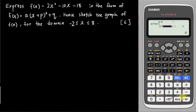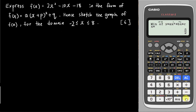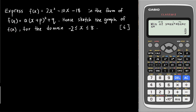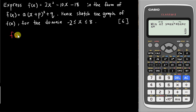Insert the equation coefficients: 2, negative 10, negative 18. The calculator will tell you the first x and second x — the solutions. But what we want is the minimum of x and the minimum of y. When you get the minimum x value, insert it as the p position, but be careful: the x value is positive 5/2, so you need to change it to negative 5/2.